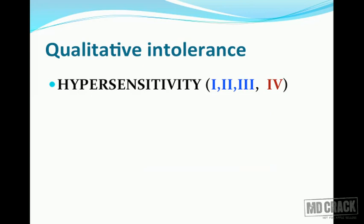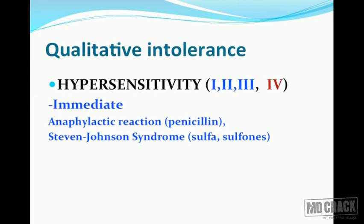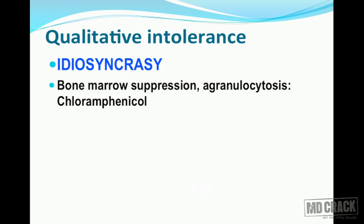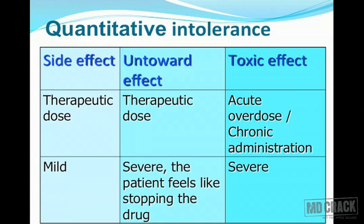In idiosyncrasy, the cause may be idiopathic or the patient may be genetically predisposed. Hypersensitivity reactions are classified into Types 1, 2, 3, and 4. Examples include anaphylactic reaction to penicillins (Type 1), Stevens-Johnson syndrome related to sulfonamides, delayed hypersensitivity, maculopapular skin eruption with ampicillin, and fixed drug eruption. Regarding idiosyncrasy: examples include bone marrow depression and agranulocytosis produced by chloramphenicol, or hemolysis in G6PD-deficient patients by primaquine or sulfa drugs.